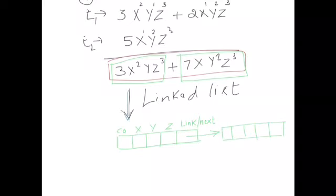For example, writing an equation as a linked list: coefficient 3, power of x is 2, power of y is 1, power of z is 3. The next node: coefficient 7, power of x is 1, power of y is 2, power of z is 3, then null. You read the number of terms per equation and pick up all coefficients and exponents of x, y, z. Missing powers are written as zero.